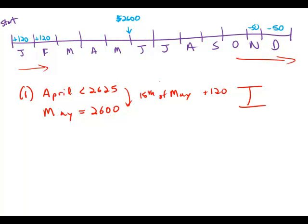Now forget about that information. That's useful information, but forget about it for the moment. Let's focus purely on statement number two. Statement number two tells us that the closing balance of Carl's account at the end of June was less than $2,675. So again, May we know is equal to $2,600. The end of May, the end of June is less than $2,675.